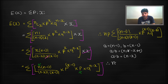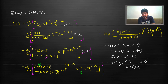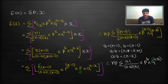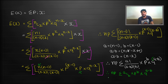Substituting: n minus 1 becomes a, so we have a factorial in the numerator; n minus x equals a minus b, so the denominator has (a−b)! ; and x minus 1 equals b, so we have b factorial. The expression becomes n·p times sigma of a!/[(a−b)!·b!] · p^b · q^(a−b), which is n·p times sigma of aCb · p^b · q^(a−b).